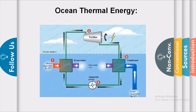The warm surface water is used to boil a volatile liquid like ammonia, and the vapors of ammonia are used to turn the turbines of the generator. The cold water at the bottom is pumped up to condense the vapor back into liquid. This is the principle of ocean thermal energy, as shown in the schematic diagram.